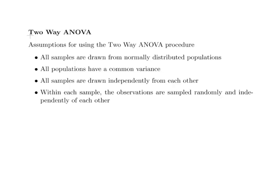Just a quick remark: assumptions are a very important part of ANOVA. When you are dealing with statistics at this level it is important to have set out the assumptions, because quite often you will be asked to check them or just state them in your exams. All assumptions for the 2-way ANOVA procedure: samples are drawn from normally distributed populations, common variance for the populations, the samples are independently drawn from each other, and within each sample the observations are sampled randomly and independently of each other.